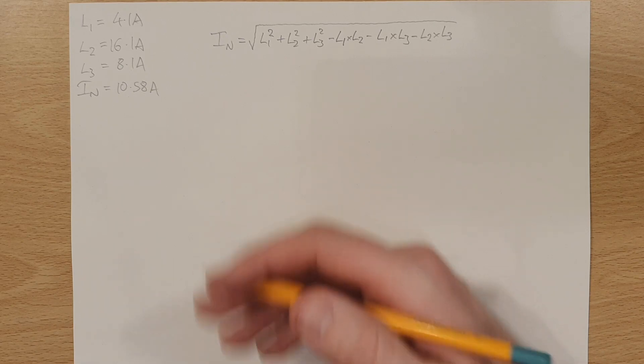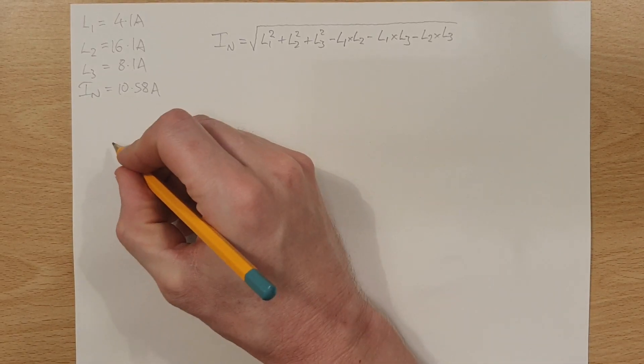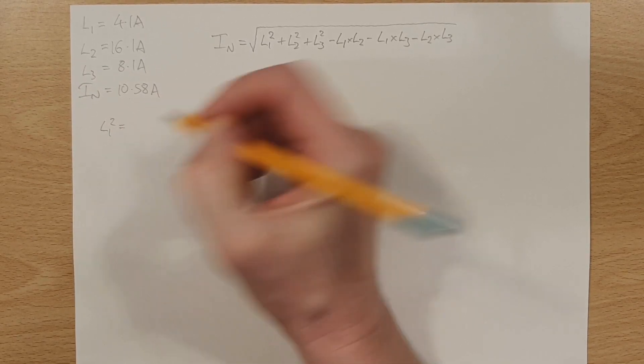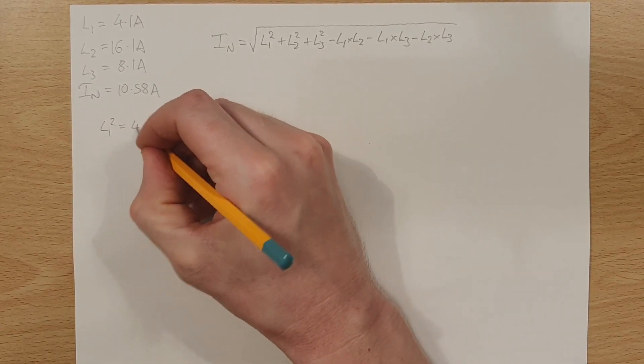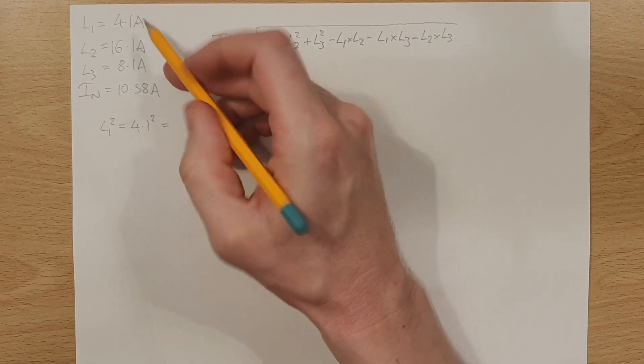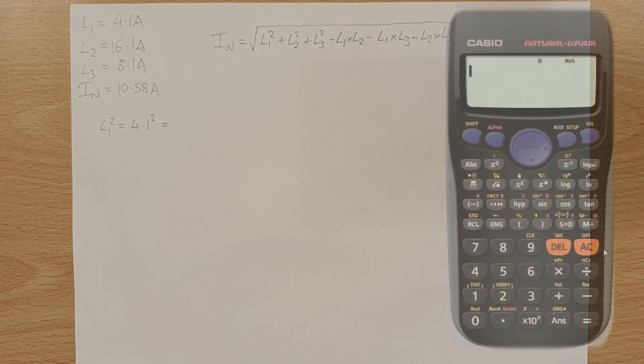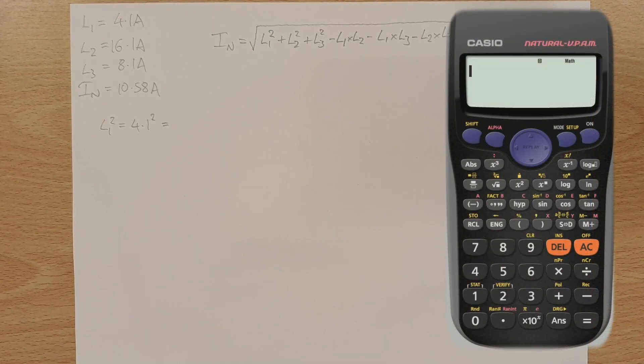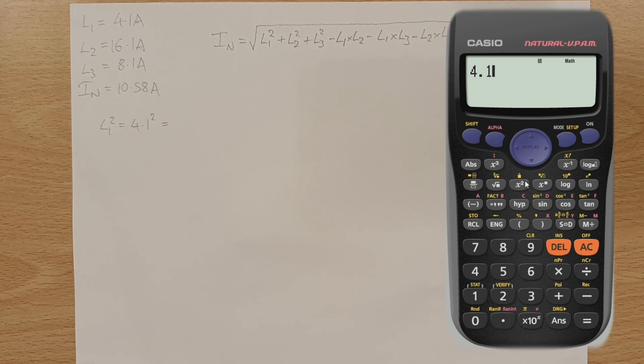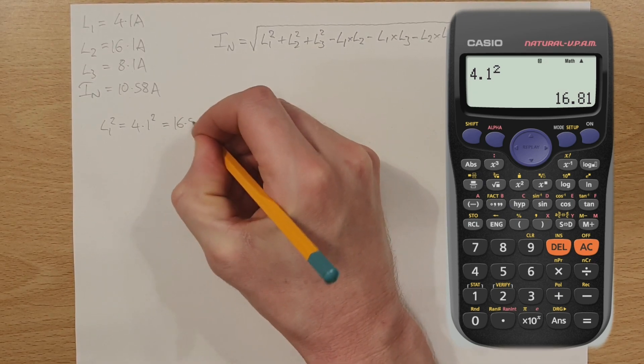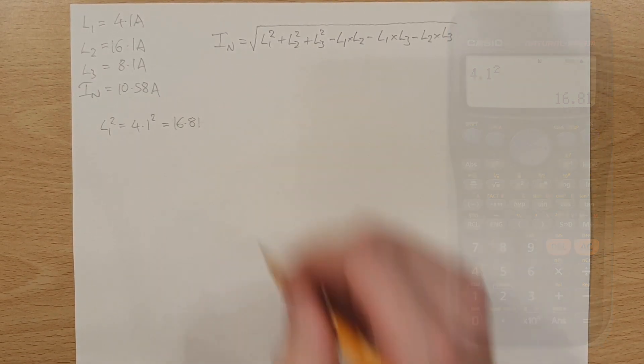So first of all, let's square all the values. So first of all, we're going to be looking at L1 squared, and we'll see what that's equal to. So we're going to do 4.1 squared. So that is L1 4.1 amps. And we're going to square that. So if we do that on our Casio FX 85 GT plus emulator on the screen here, we find that 4.1 squared is equal to 16.81. 16.81 there.